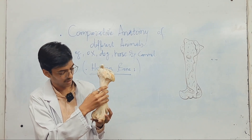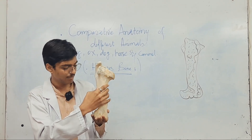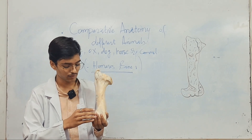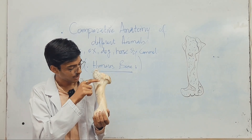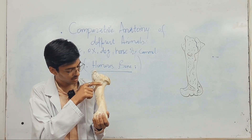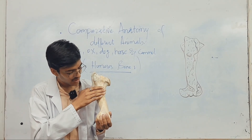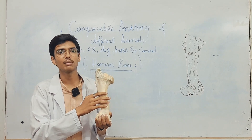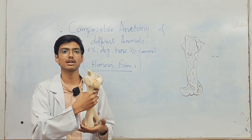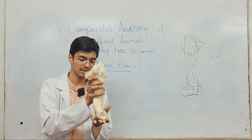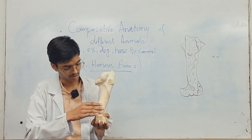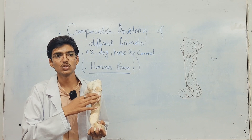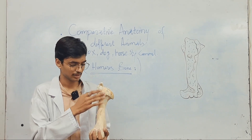This is the medial view. How do I know this is the medial view? Because this medial surface is very smooth compared to the lateral surface. And this is the lateral surface — it is not as smooth as the medial surface.